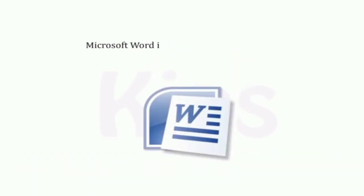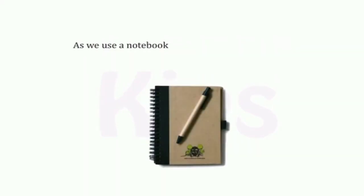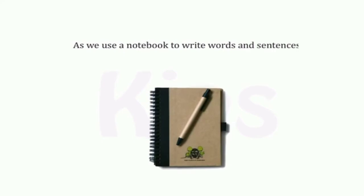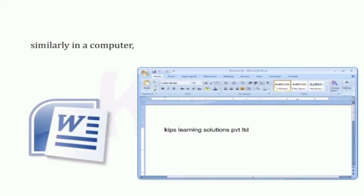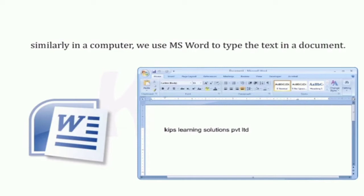What is MS Word? Microsoft Word is a word processing software. As we use a notebook to write words and sentences, similarly, in a computer, we use MS Word to type the text in a document.